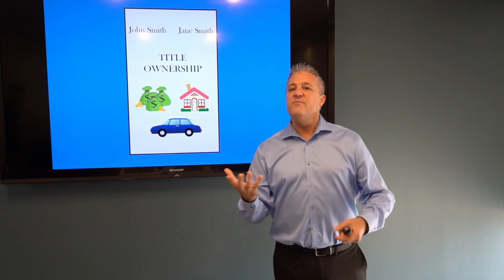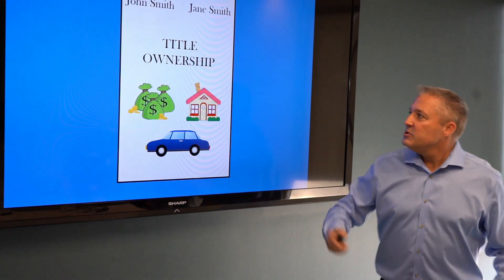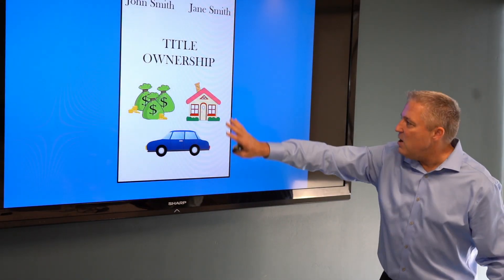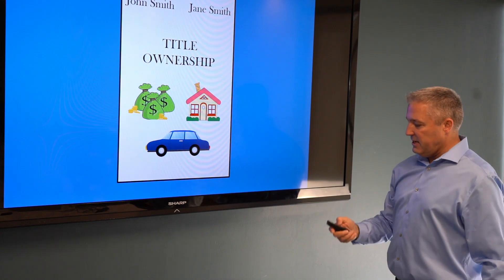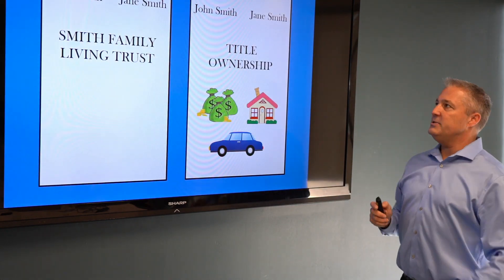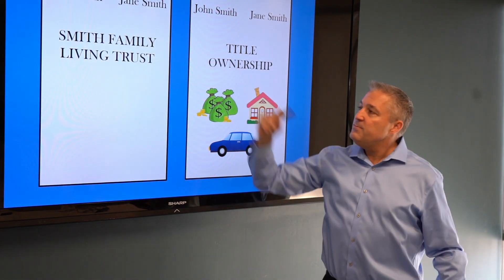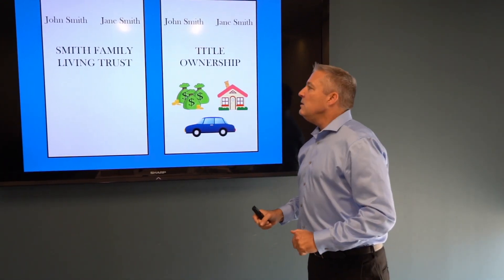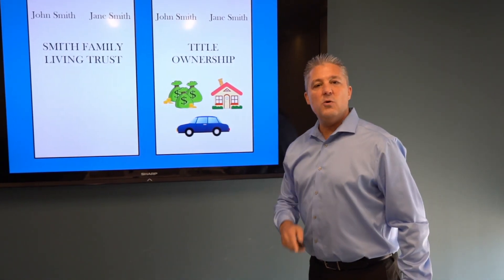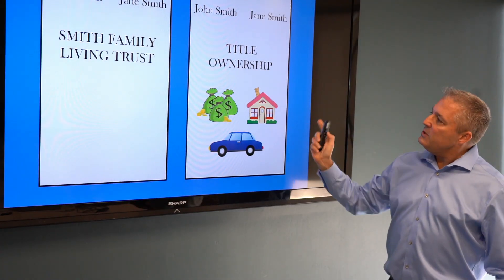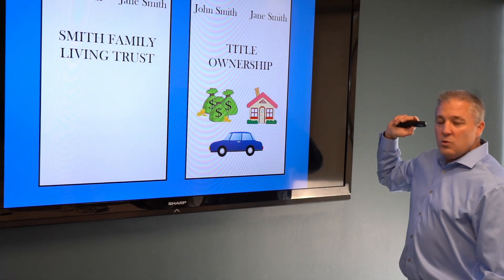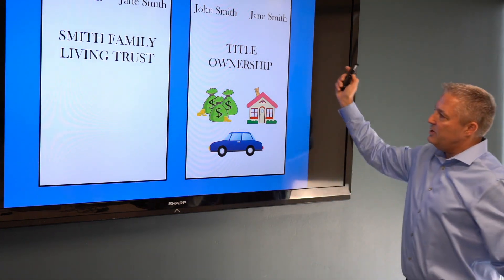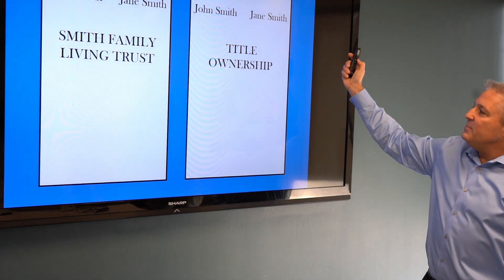Now that your trust exists, we can go through the process of putting the assets into the trust. Here you've got John Smith and Jane Smith, who own all of their assets. Now we create a trust with John Smith and Jane Smith listed as co-trustors and co-trustees — owners and managers. The trust has been signed, witnessed, and notarized. The next step is to put the assets into the trust. The word we use for that is called funding the assets into the trust.